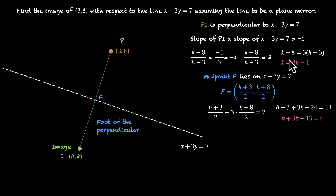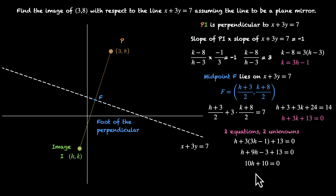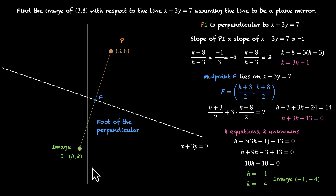Now we have two equations and two variables. Let's substitute k equals 3h minus 1 into h plus 3k plus 13 equals 0. We get h plus 3 times (3h minus 1) plus 13 equals 0, which is h plus 9h minus 3 plus 13 equals 0, giving 10h plus 10 equals 0, so h equals minus 1. If h is minus 1, then k equals minus 3 minus 1, which is minus 4. So the image is (minus 1, minus 4).